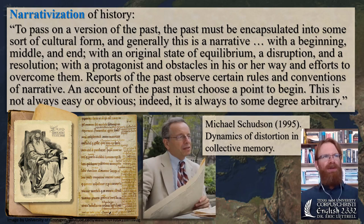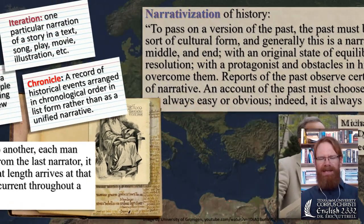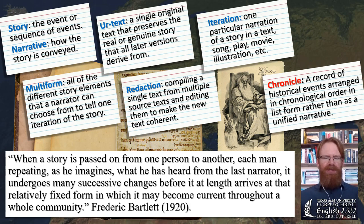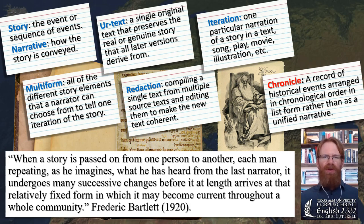As Michael Schudson put it, to pass a version of the past on, it has to be encapsulated into some sort of cultural form — into a narrative with a beginning, a middle and end, an original state of equilibrium, a disruption or resolution, and a protagonist overcoming obstacles. The historian Hayden White has also written a lot about the narrativization of history, or the emplotment of history. As a narrative, a chronicle is susceptible to change over time — the author has to select through all these different potential elements and ultimately decide what's important, what to include, how to describe it, what interpretations to add.